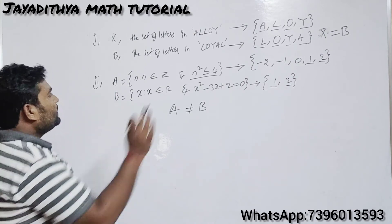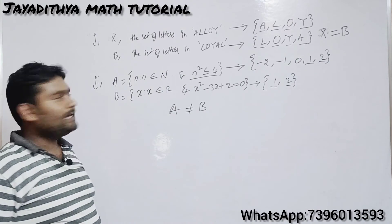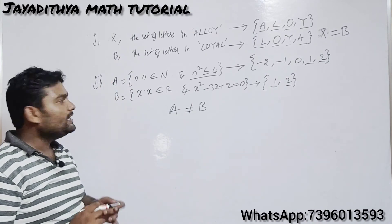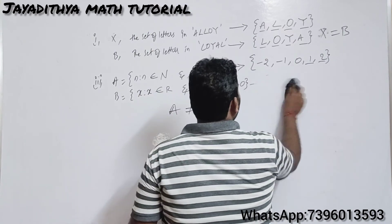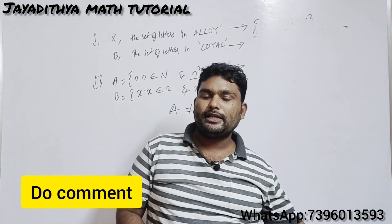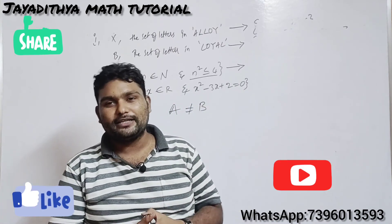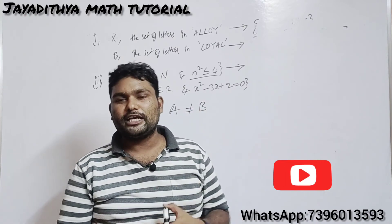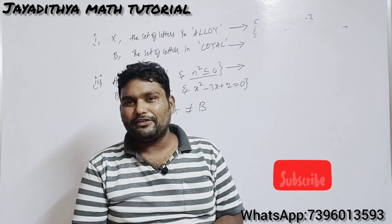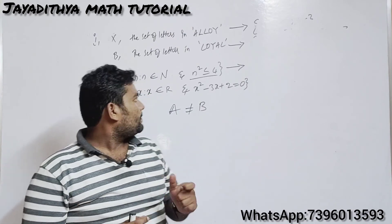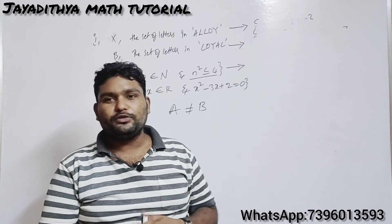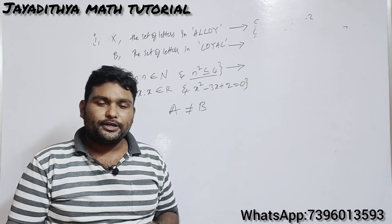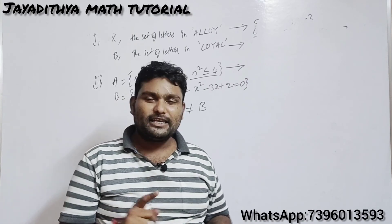I'll give you a question: just change the condition to n (instead of the previous variable) and try the same example — give your answer in the comment section whether A and B are equal sets or not. I hope you have understood this class well. If you have any doubts, comment below. In our next class we will solve exercise problems related to equal sets and reveal the answer to today's question. Don't miss it — bye!